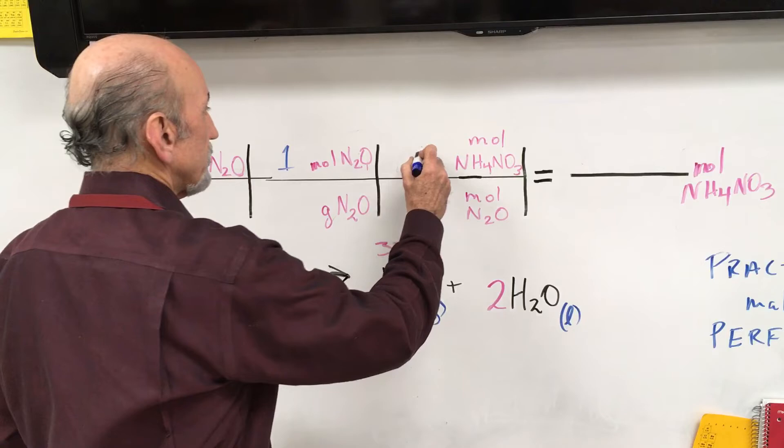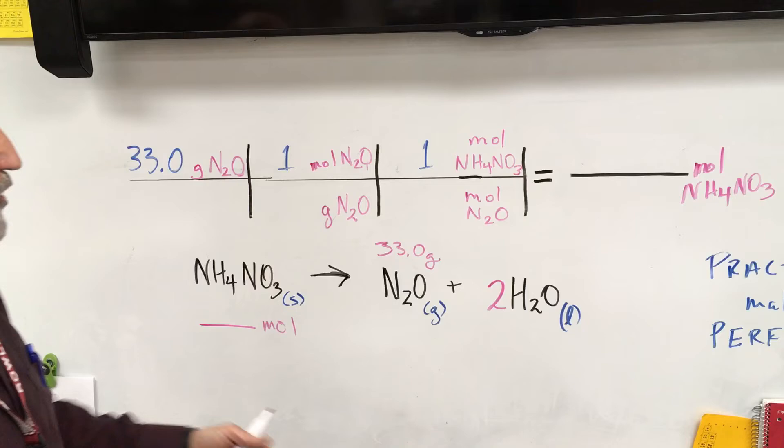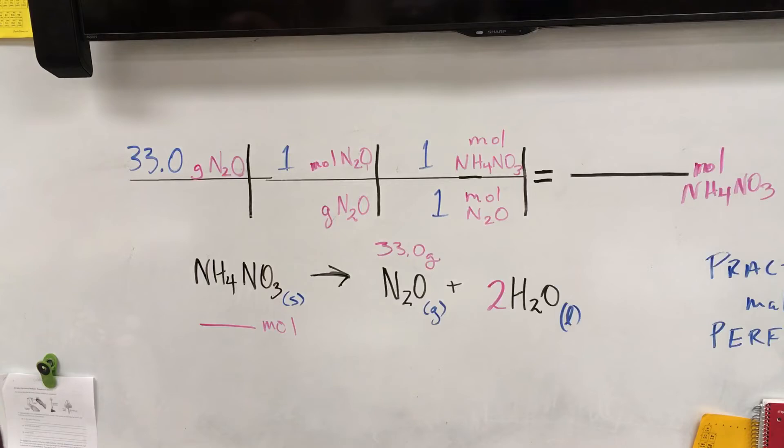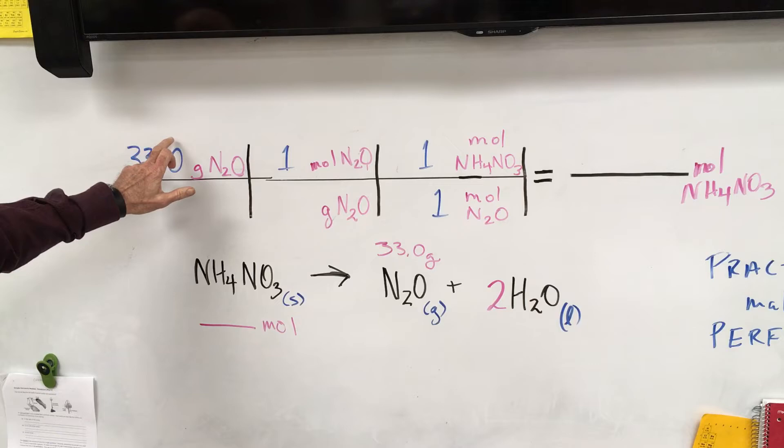And dinitrogen monoxide—nothing's in front. Boy, that's gonna be easy. One—that means we can ignore that because one and one cancel out. So basically we're going to be left with taking the 33 grams and dividing by its mass, and whatever we get for moles of dinitrogen monoxide it's gonna match that because it's a one-to-one ratio.